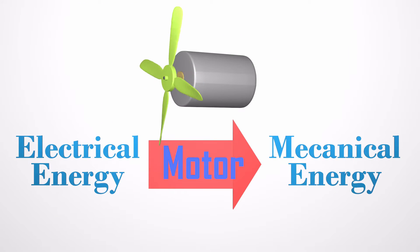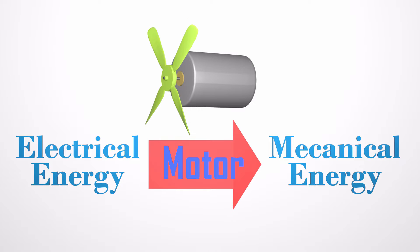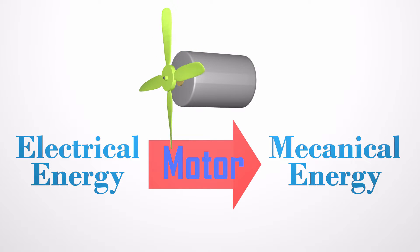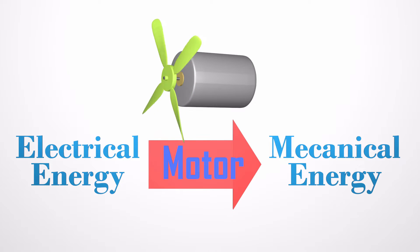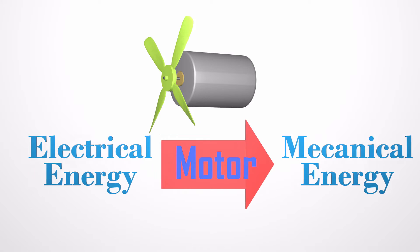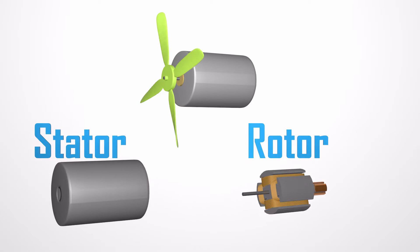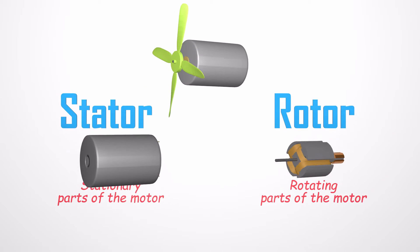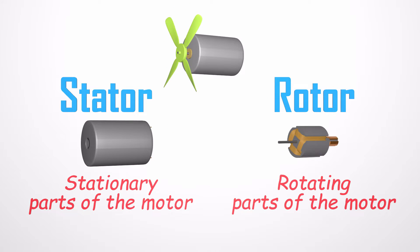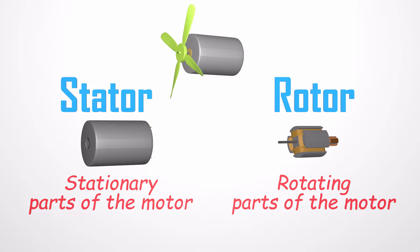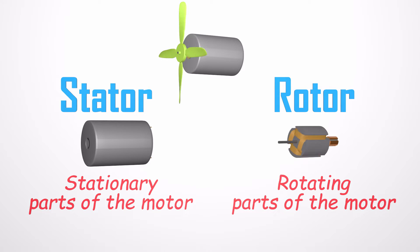An electric motor is a device that converts electrical energy into mechanical energy. A motor mainly consists of two parts: a stator and a rotor. The stator contains all the stationary parts of a motor, while the rotor contains the rotating parts.